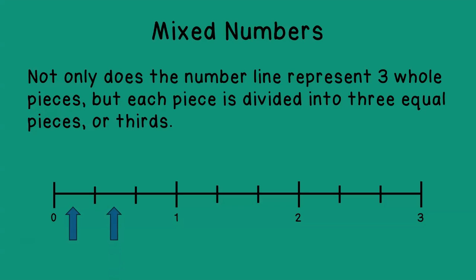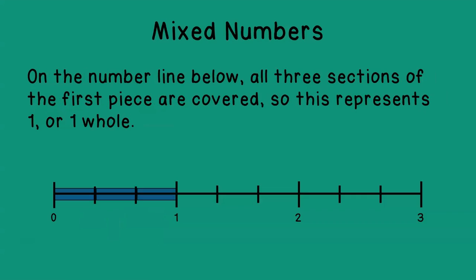1 third, 2 thirds, and 3 thirds. So this is divided into 3 equal pieces. On the number line below, all 3 sections of the first piece are covered. So this is going to represent 1 or 1 whole. You might even write this fraction as 3 thirds.